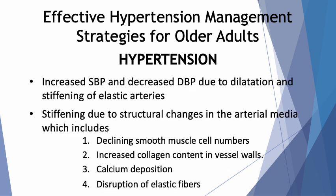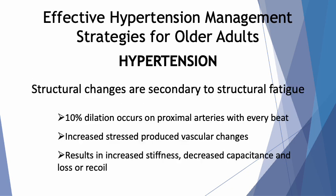This is primarily caused by increased arterial stiffness and lower diastolic blood pressure in older adults. The phenomenon of increased systolic blood pressure and decreased diastolic blood pressure is due to changes that occur in the elastic arteries of the elderly — they dilate and stiffen. This arterial stiffening is due to structural changes in the arterial media, which are secondary to structural fatigue caused by the 10% dilation that occurs on the proximal arteries with every beat of the heart. Over the years, the increased stress on the vascular walls produces these vascular changes.